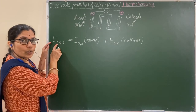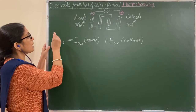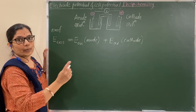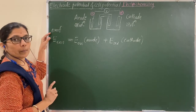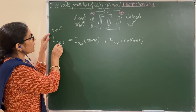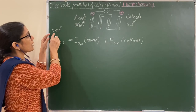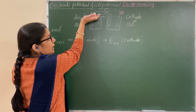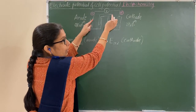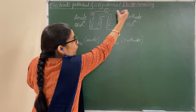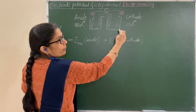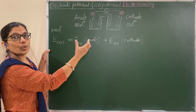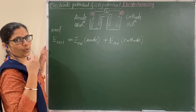This cell potential is also called the EMF of the cell — the electromotive force of the cell. The cell potential is the force that pushes electrons away from the anode and pulls them towards the cathode, where they are consumed. Therefore, it is the electromotive force of the cell, that is the cell potential.